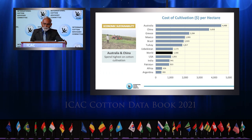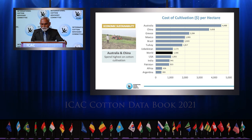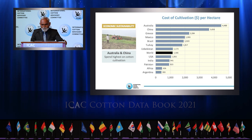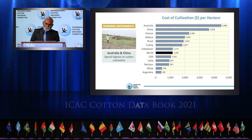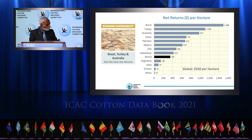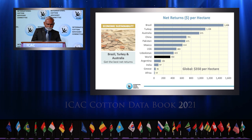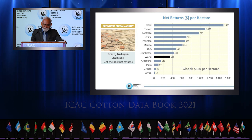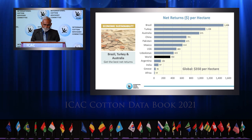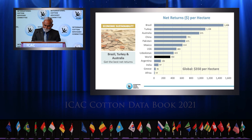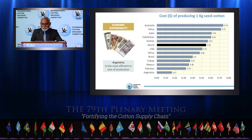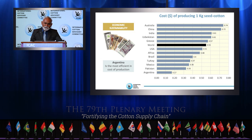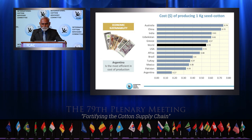Finally, in the next three slides, we will examine a few snippets on economic sustainability that deal with the cost of cultivation, net returns, and cost of producing one kilogram of seed cotton. The cost of cultivation is highest in Australia and China, and lowest in Africa and Argentina. In fact, the cost of cultivation in Argentina and Africa is about one-third of the global average cost of cultivation. Brazil, Turkey, and Australia get the best net returns. Africa, Greece, and India have low net returns, which is something that these countries must start looking at. The cost of producing one kilogram of seed cotton is lowest in Argentina, making Argentina the most efficient in cost of producing seed cotton. The cost of production is highest in Australia and China.